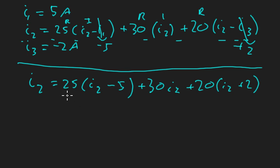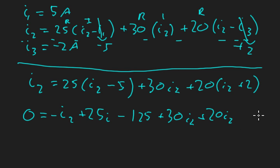I'm going to expand. Now you'll notice we have one equation in one unknown so I'm just going to expand and simplify. I'll move this I2 over to the other side. 0 equals negative I2 and expand the brackets plus 25I2 minus 5 times... negative 5 times 25 is negative 125, so negative 125 plus 30 I2 plus 20 I2 plus 40.